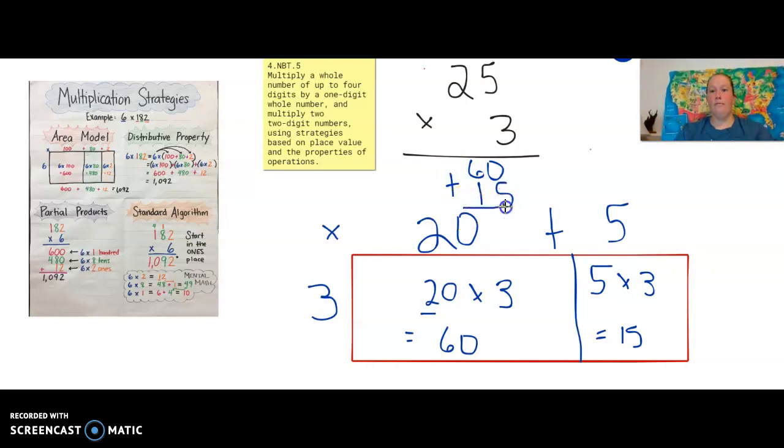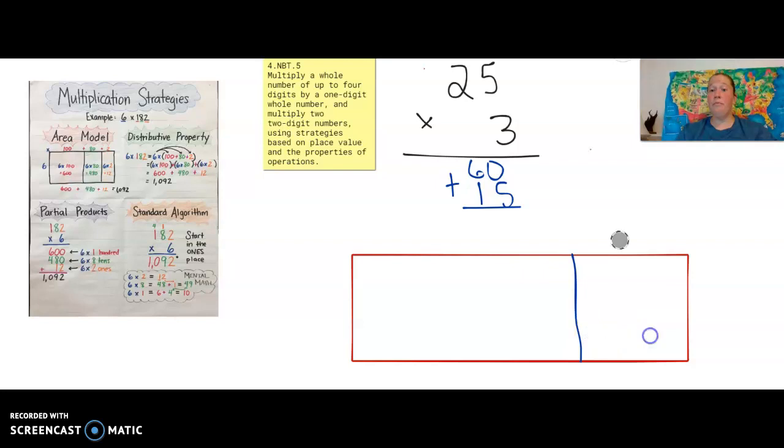I'm going to just erase so I have some room. So when we do 60 plus 15, what do we get? Good. If you said 75, awesome. And we knew, and like I said, some of us knew that in our head already, and that's okay. And then we could prove it also with this area model. And here's the partial products.